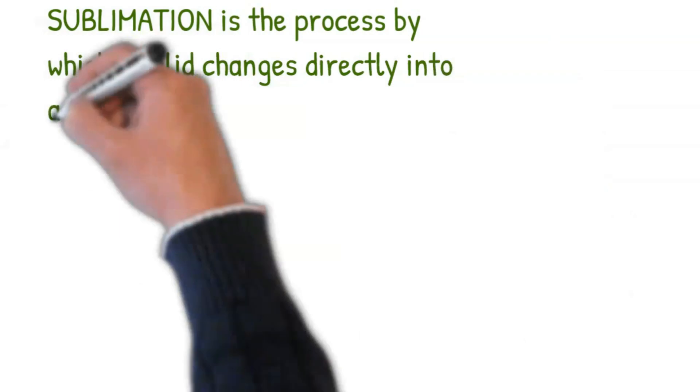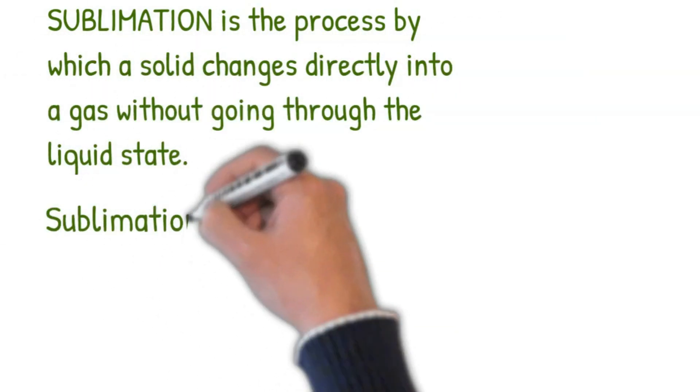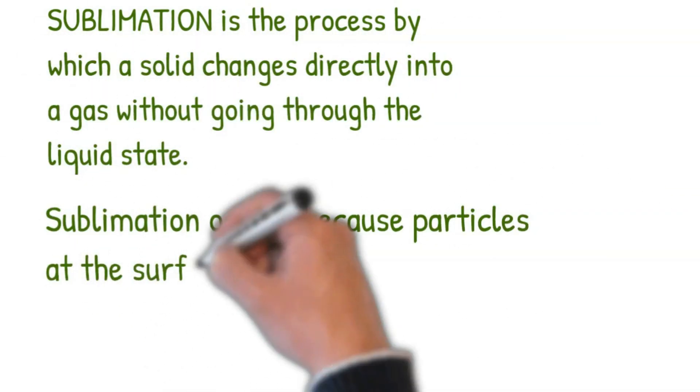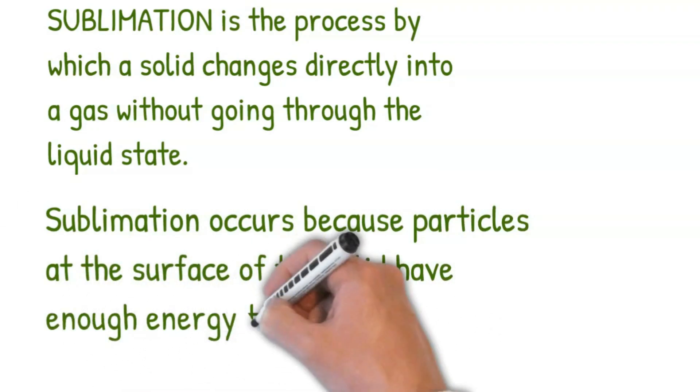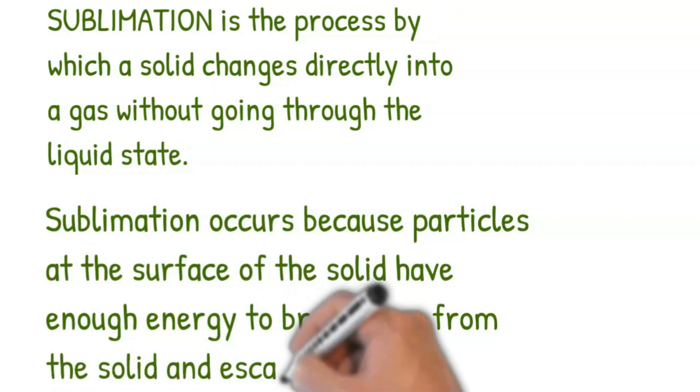Sublimation is a process by which a solid changes directly into a gas without going through the liquid state. Sublimation occurs because particles at the surface of the solid have enough energy to break away from the solid and escape as a gas.